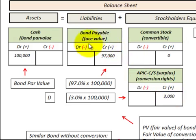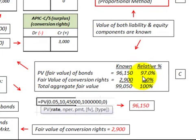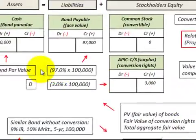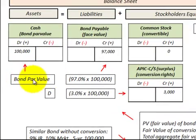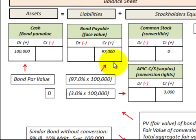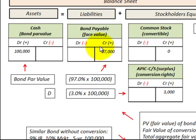We've allocated the debt portion and the equity portion based on a relative percentage of these known amounts. We allocated those to the bond par value, or whatever the issue price on that bond would be. This is how we calculate the relative fair market value using the proportional method for allocating the debt and equity portions on this convertible debt at the issuance of the bond.